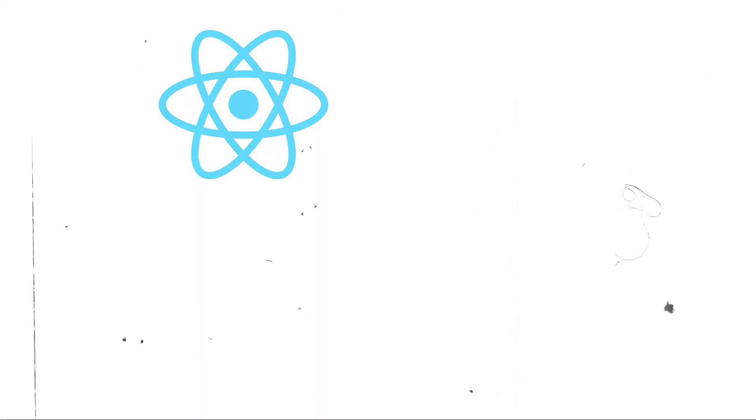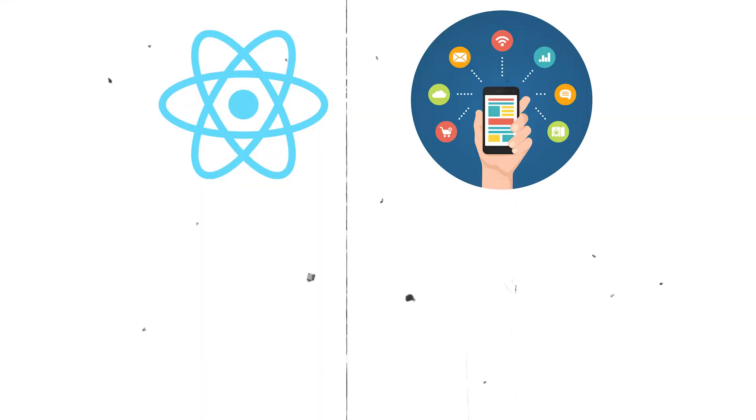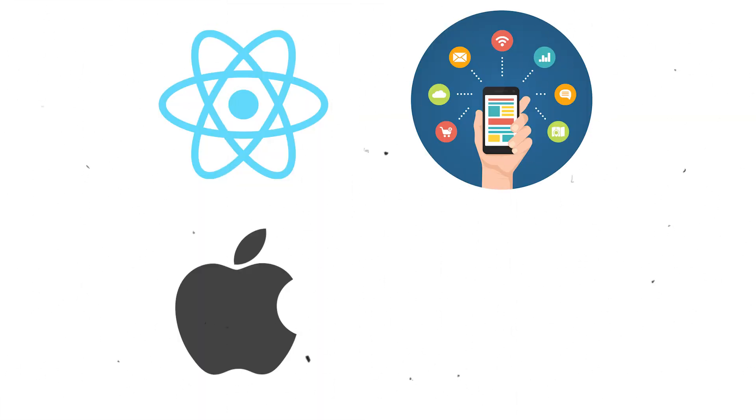So what is React Native? React Native is a JavaScript framework that allows us to build user interfaces. React Native helps to build native mobile apps for both iOS and Android. The advantage is that using a single codebase, you can write apps for both platforms, thereby saving time and effort.